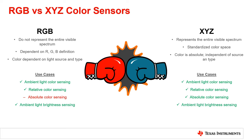In summary, both RGB color sensors like TI's OPT4060 and XYZ color sensors like TI's OPT4048 can sense different colors and distinguish the differences between them. RGB color sensors do not represent the entire visible spectrum and are dependent on light source and type, unlike XYZ color sensors. For most applications, either an RGB color sensor or an XYZ color sensor can be used. However, in some applications, there are advantages and disadvantages to using either color sensor type. For the most part, while usually more cost effective, RGB color sensors require additional calibration and transformations while being less accurate when compared to an XYZ color sensor.